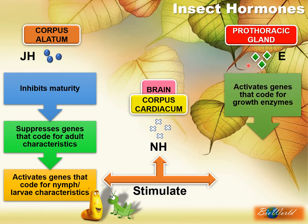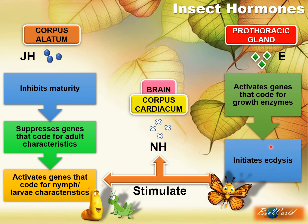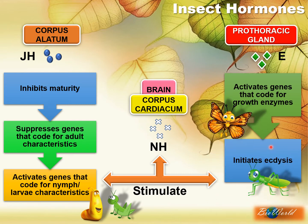Ecdysone does the exact opposite. Ecdysone will activate genes that will code for the growth of the insect. These enzymes will promote the process of ecdysis, which we will see next when discussing incomplete metamorphosis.